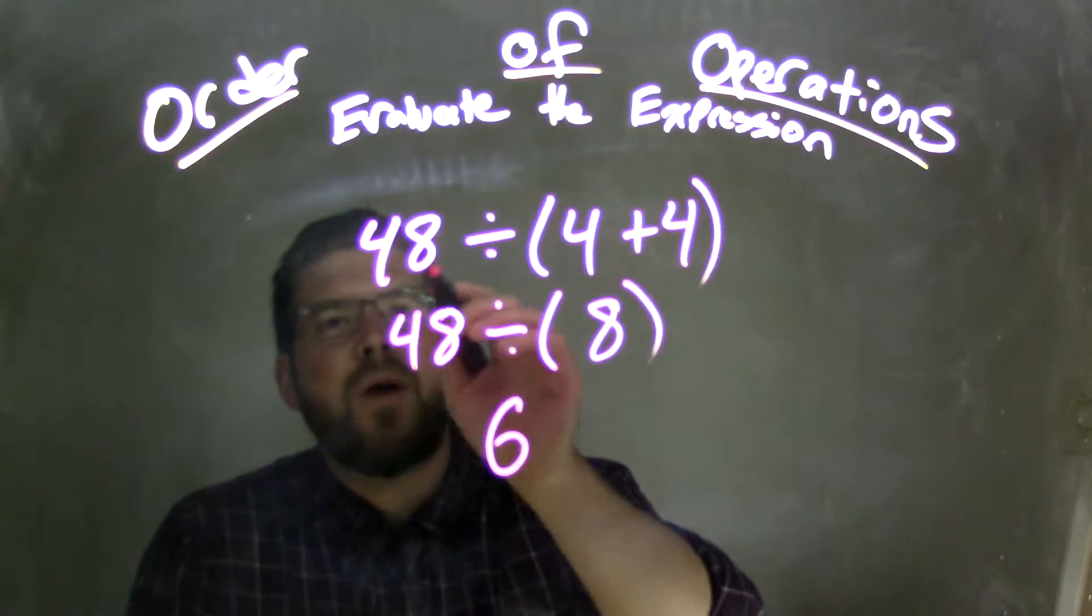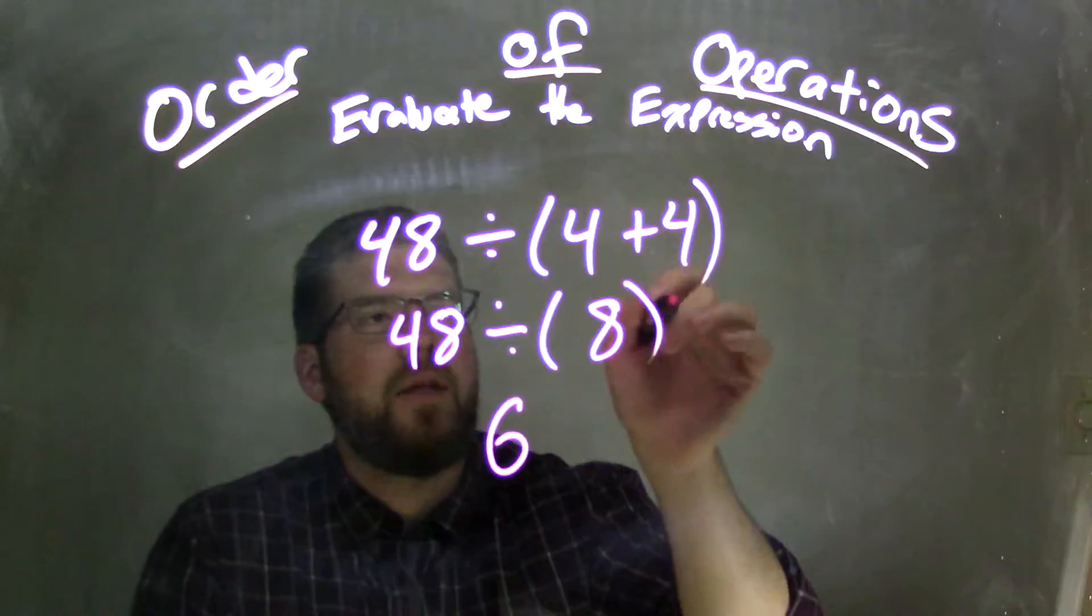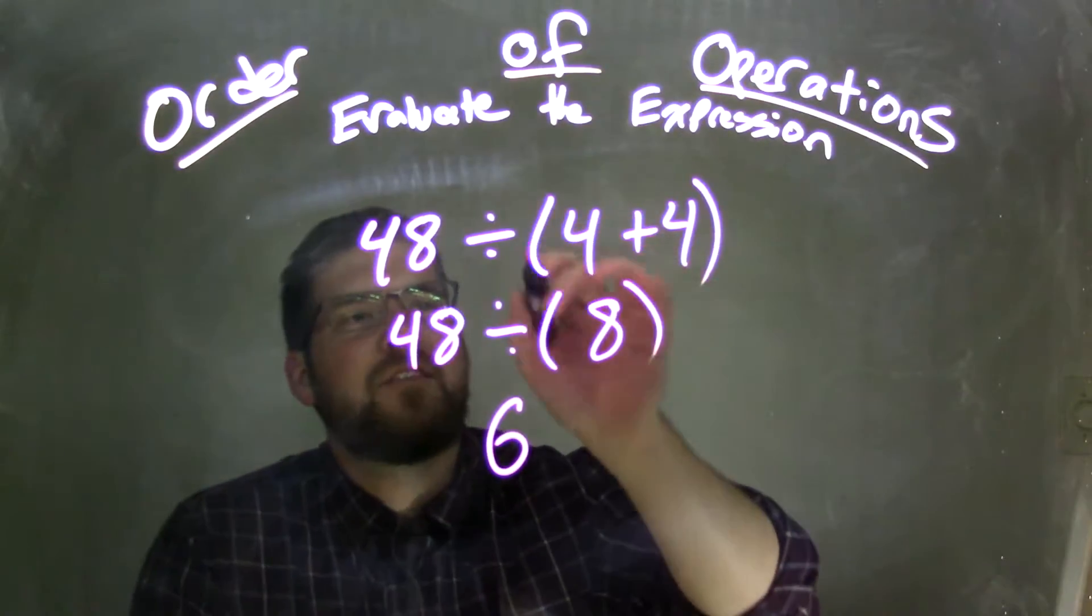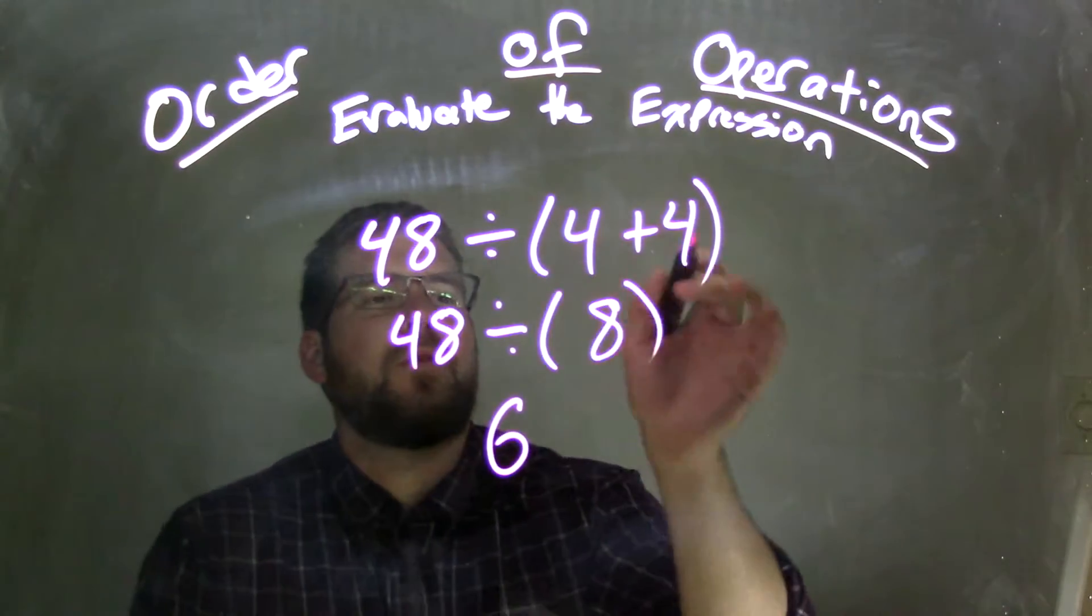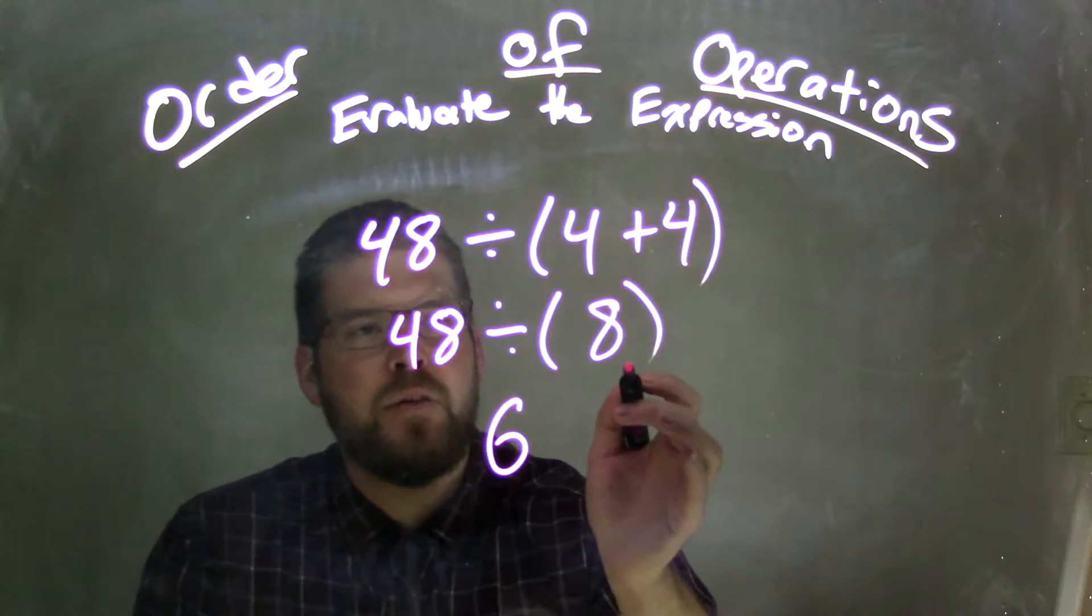So when we evaluated this expression, we had division and then parentheses and addition. Since the parentheses were there, we had to solve whatever was inside of those parentheses first. So 4 plus 4 was 8, and then now we can do our division, 48 divided by 8, which was 6.